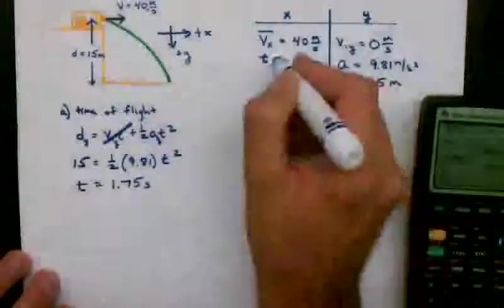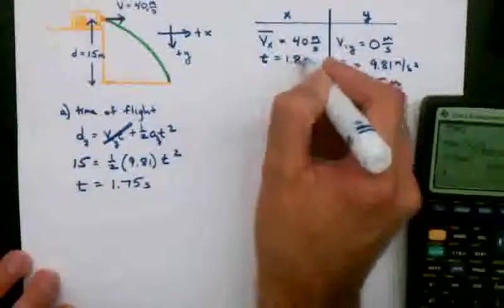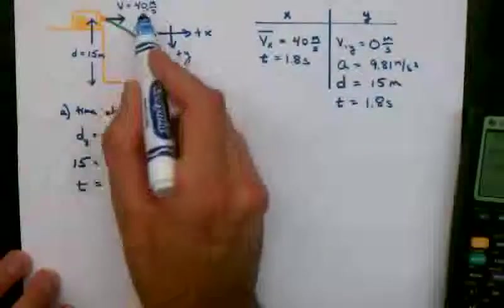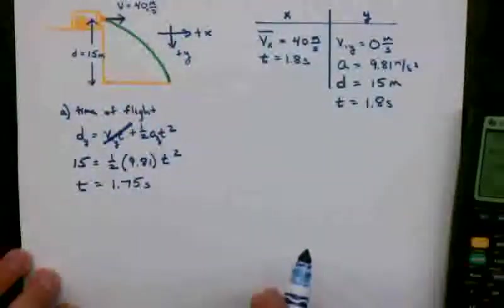Now on my answer line, I prefer to write 1.8 seconds, because I want to stick to two significant figures. Not the biggest deal when we get to this type of problem.